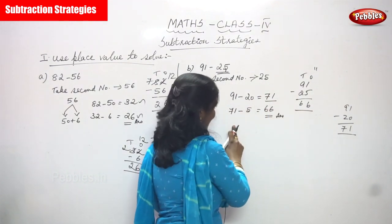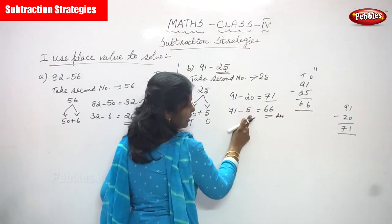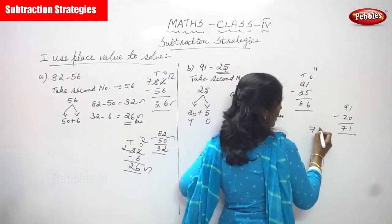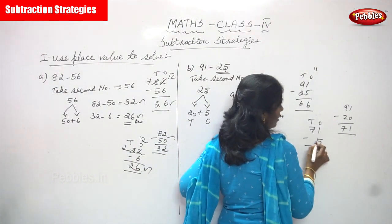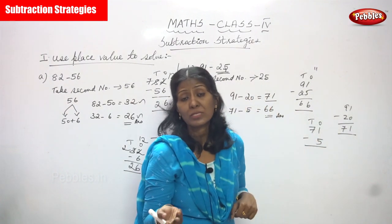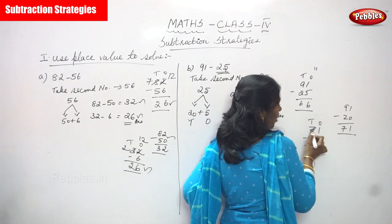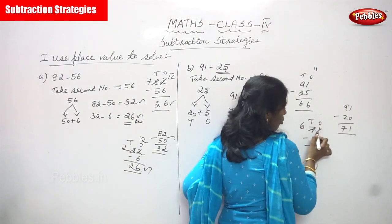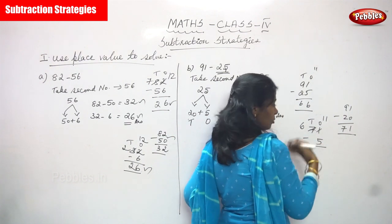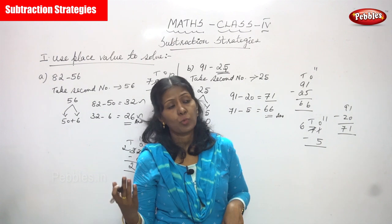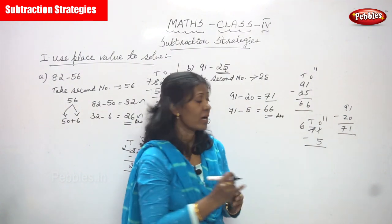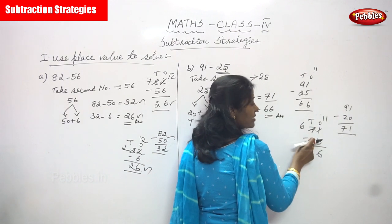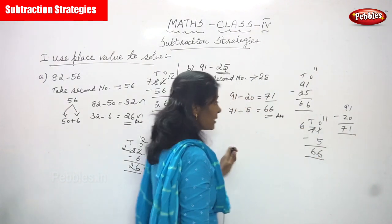Write 71 again, then subtract with the 1's: 71 minus 5. The 1's place has 1, which is not enough to subtract 5. Borrow from the 10's place — 7 becomes 6 and 1 becomes 11. So 11 minus 5: count 6, 7, 8, 9, 10, 11 — that is 6. In the 10's place there is no number, so consider 0; bring down 6. The answer is 66.